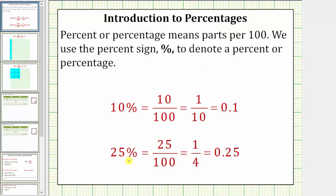As another example, if there's a 25% chance something will happen, that means there are 25 chances out of a total 100 chances the event will occur. And therefore, 25% is equivalent to the fraction 25 hundredths, which simplifies to one-fourth, or as a decimal, 0.25.